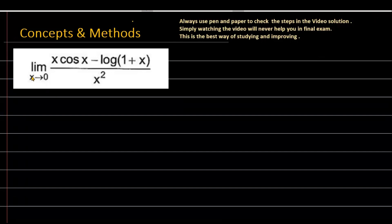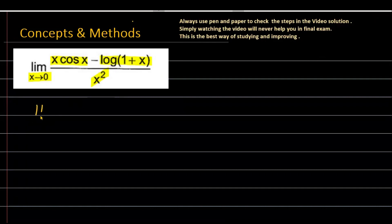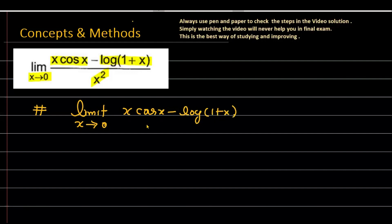The question is: limit as x approaches 0 of x·cos(x) minus log(1+x), divided by x raised to the power 2.